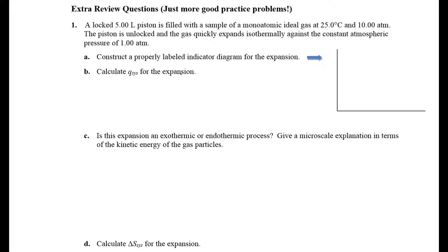Looking at this first problem, your spidey sense should say this is a PV problem. Let's construct an indicator diagram. We have a locked piston at five liters initial volume. The y-axis is P_external (with units) and the x-axis is volume in liters. We start at 5.00 liters. We've got a monoatomic ideal gas at standard temperature and 10 atm pressure — that's pretty high — and you're going to unlock it and expand isothermally against atmospheric pressure, a convenient 1.00 atm.